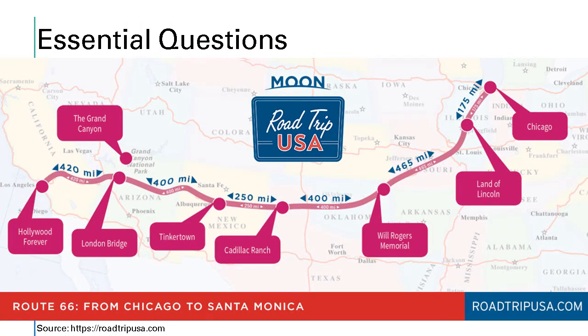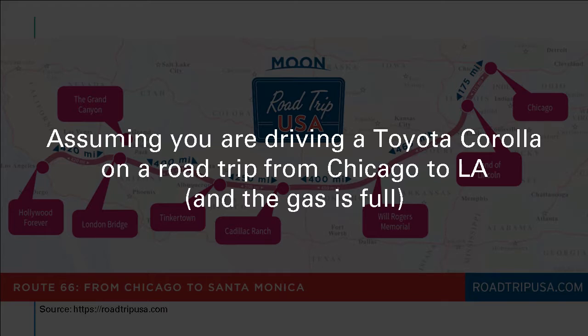Let me ask you a real-life situation question. Let's say you're driving from Chicago to LA. Do you know how far away these two big cities are? They're about 2,000 miles away. Let's be more specific — assuming you're driving a Toyota Corolla on a road trip from Chicago to LA, and the gas tank is full.